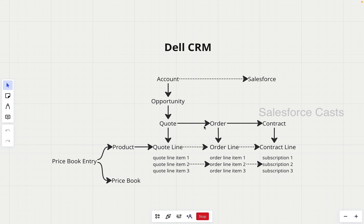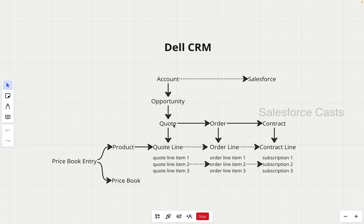Once the quote is activated, an order record will be created. Once the order record is created, we can generate an invoice from it. So once the quote record is activated, the order record gets created. And likewise, all the quote line items will be copied over to order line items — the quote line items will exist as-is, however clones of these 3 records will be created, inserted into the order line item object. The parent for these 3 records is going to be the newly created order record.